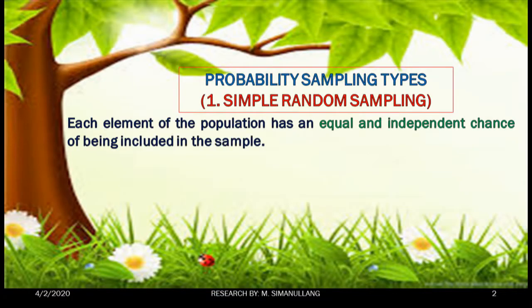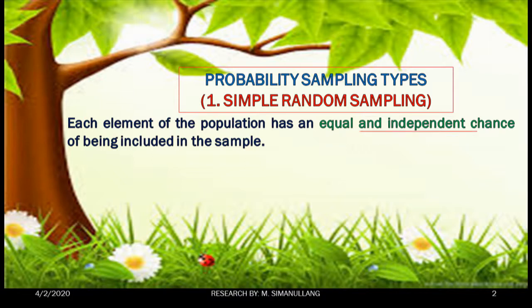In simple random sampling, each element of the population has an equal and independent chance of being included in the sample. It means all members of the population should have an equal and independent chance to be taken or to be included in the sample.